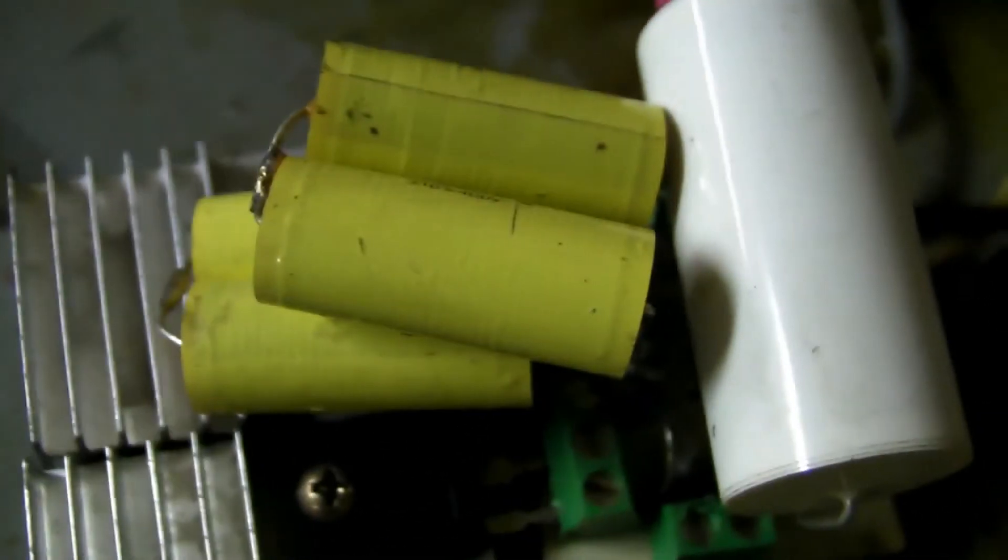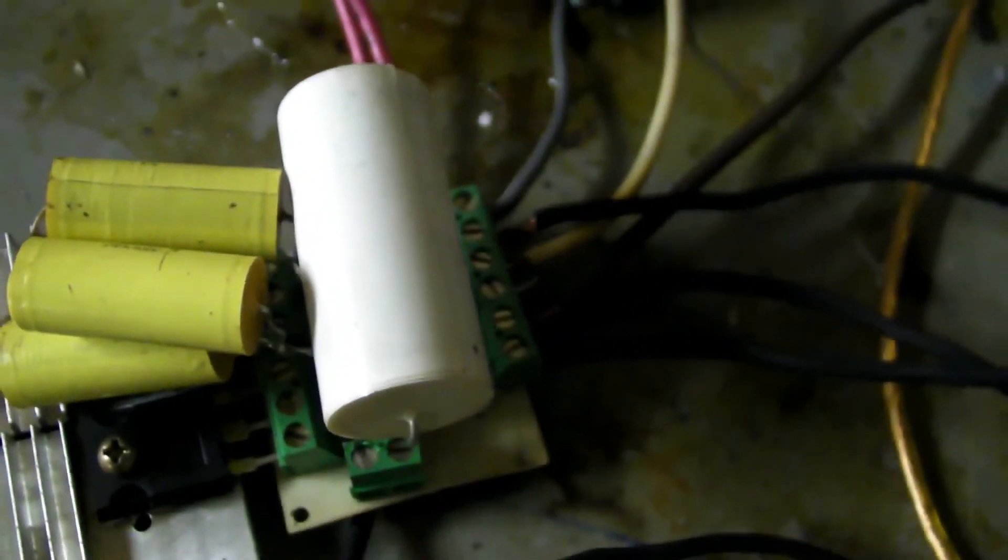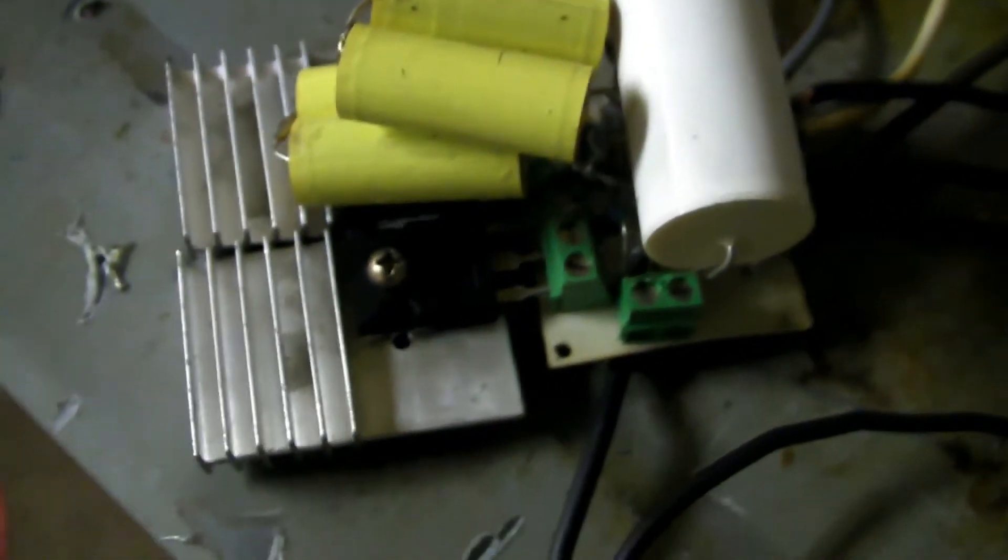So it's 0.5 microfarads. And then I have this 0.1 microfarad in parallel, so it's 0.6 microfarads. That seems to work pretty darn good with these flybacks.